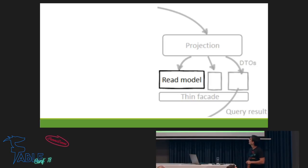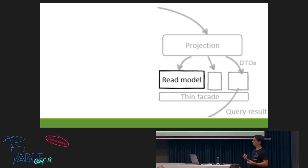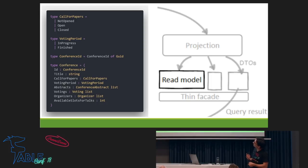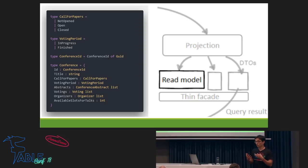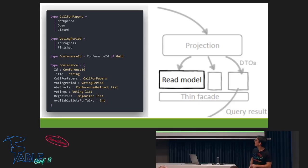We have those events, and now we want a read model. We want a page that shows a specific conference. The read model could look like a conference record with an ID, a title, a call for papers, and the voting period status — 'in progress' or 'finished,' 'not opened,' 'opened,' or 'closed.' This is one read model for one part of the system. If I want to present one specific conference page, I ask this read model for a specific conference and I don't need to do any joins.